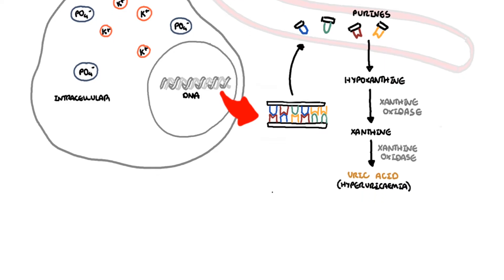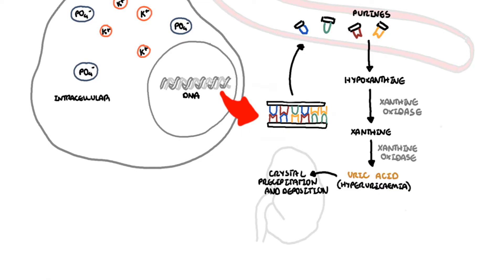Overproduction and overexcretion of uric acid in tumor lysis syndrome can lead to crystal precipitation and deposition in the renal tubules, resulting in acute kidney injury.